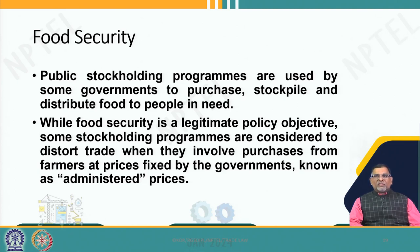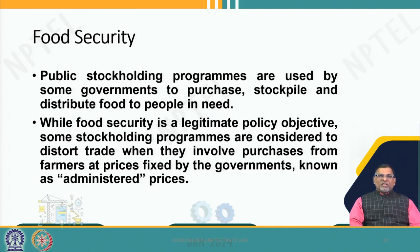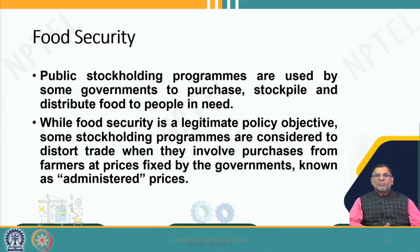The state purchases food at MSP — minimum support price — then stockpiles it and distributes it at a very low price. The developed countries consider this to be trade distorting. But if you look carefully, this is not for trade. The government is not selling these food grains at market rates. The government is providing this food on food security grounds. India gives rice for 1 rupee, 2 rupees, and 3 rupees for different categories of people through the public distribution system. This is not trade at all.